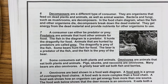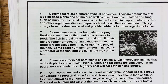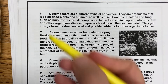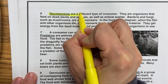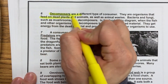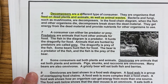Paragraph six: Decomposers are a different type of consumer. They are organisms that feed on dead plants and animals as well as animal wastes. Bacteria and fungi, such as mushrooms, are decomposers. In the food chain diagram, when the fish and other organisms die, decomposers break down the dead material. They get energy from the dead material and provide nutrients for other organisms to use. So in paragraph six we learned that decomposers are a different type of consumer and that they feed on dead plants and animals as well as animal wastes.